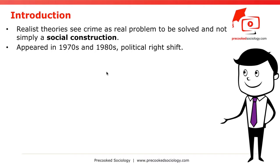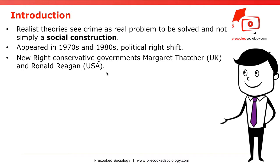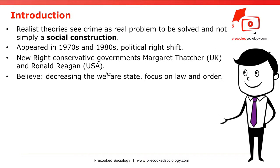Realist approaches appeared in the 1970s and 1980s during a climate when politics shifted more towards the right on the political spectrum. Both in the UK and in North America, new right conservative governments were voted in — for example, Margaret Thatcher in the UK and Ronald Reagan in the United States. These governments believed in decreasing the welfare state and focusing on law and order, getting tough on crime with increased use of the death penalty in the United States and prisons.